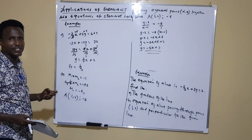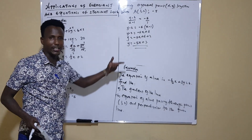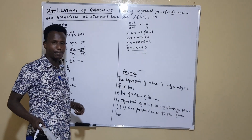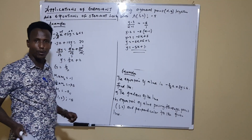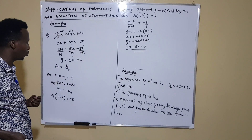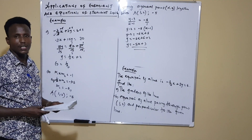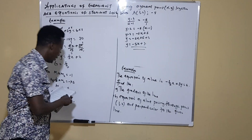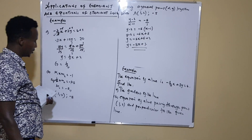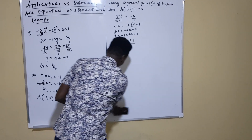This is typically how such questions are framed. You are given an equation — from it you find the gradient. You are also given another line which is perpendicular to the first and passes through a certain point. The gradient from the first line, multiplied by m2, equals negative 1. From there you get m2, then use a general point together with the given point to find the equation. In our next example we'll see a different concept.